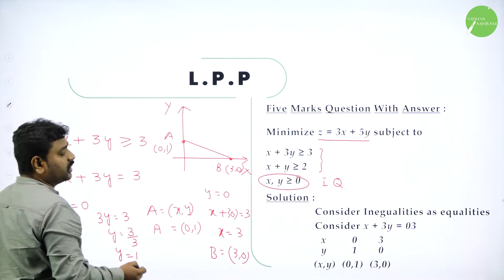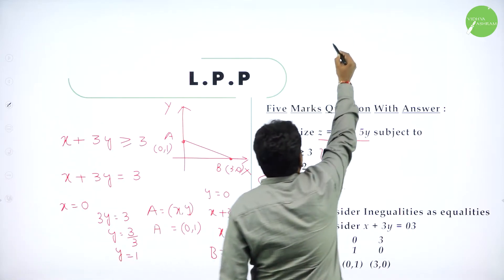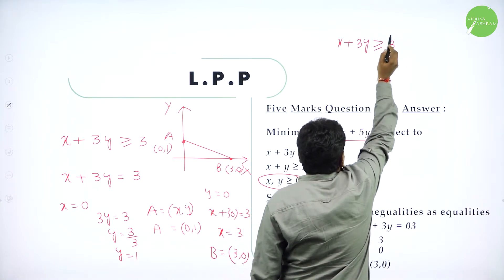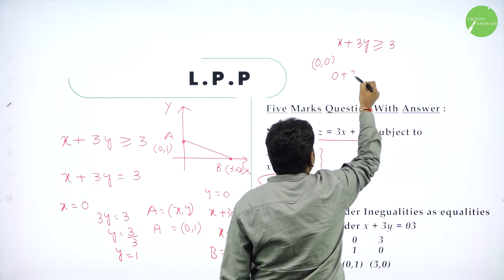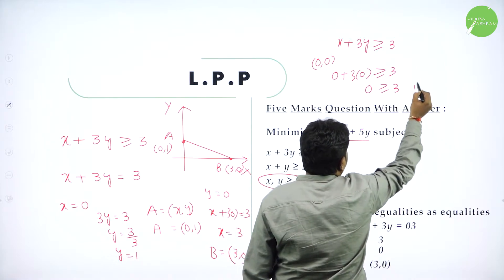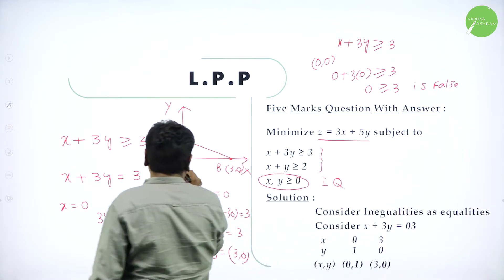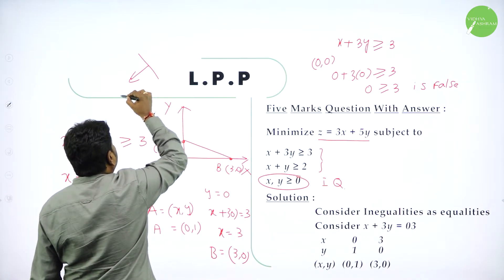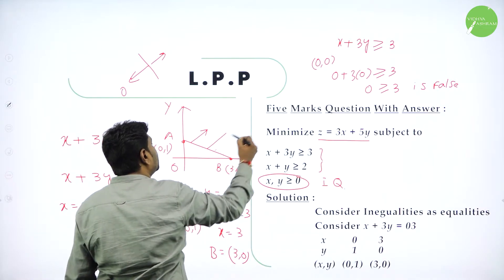Now, shading. Greater than — dear students, greater than generally means shade above. For X plus 3Y greater than or equal to 3: if I put origin, that is 0 comma 0, we get 0 greater than 3, which is false. So don't shade towards 0 — shade away from 0. So for this line, shading should be away from 0, upwards. Now I have drawn one line and shaded it.